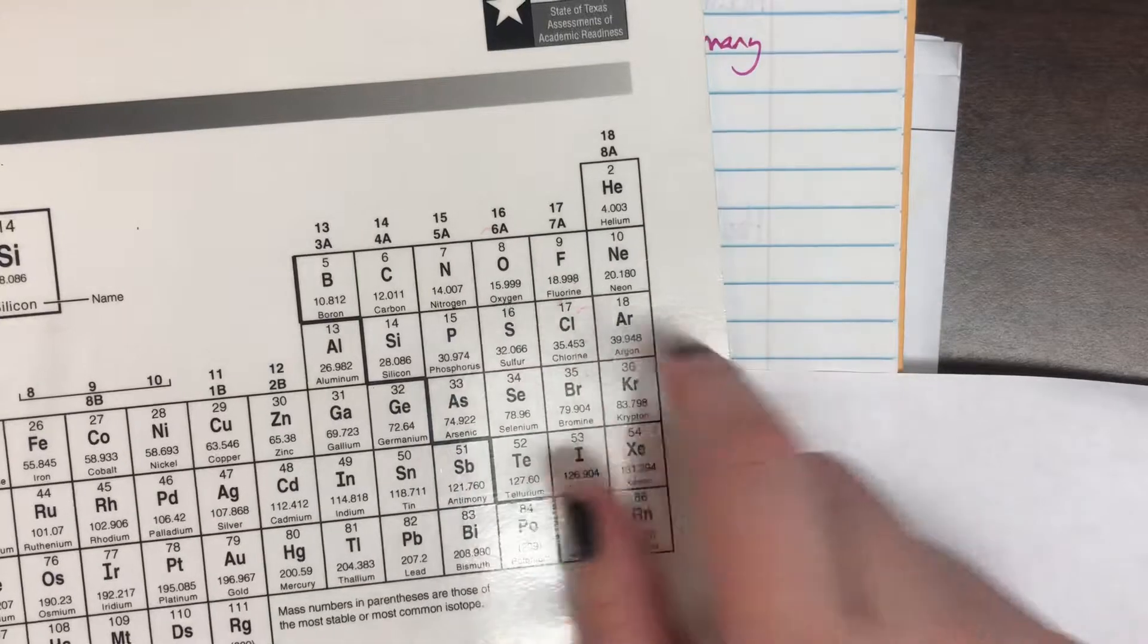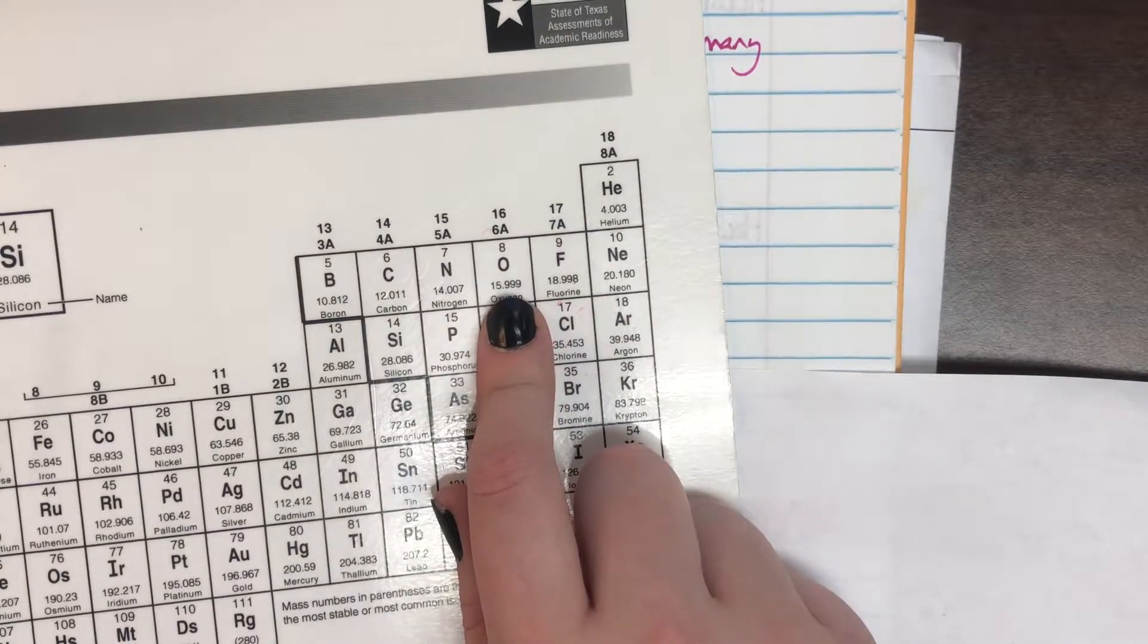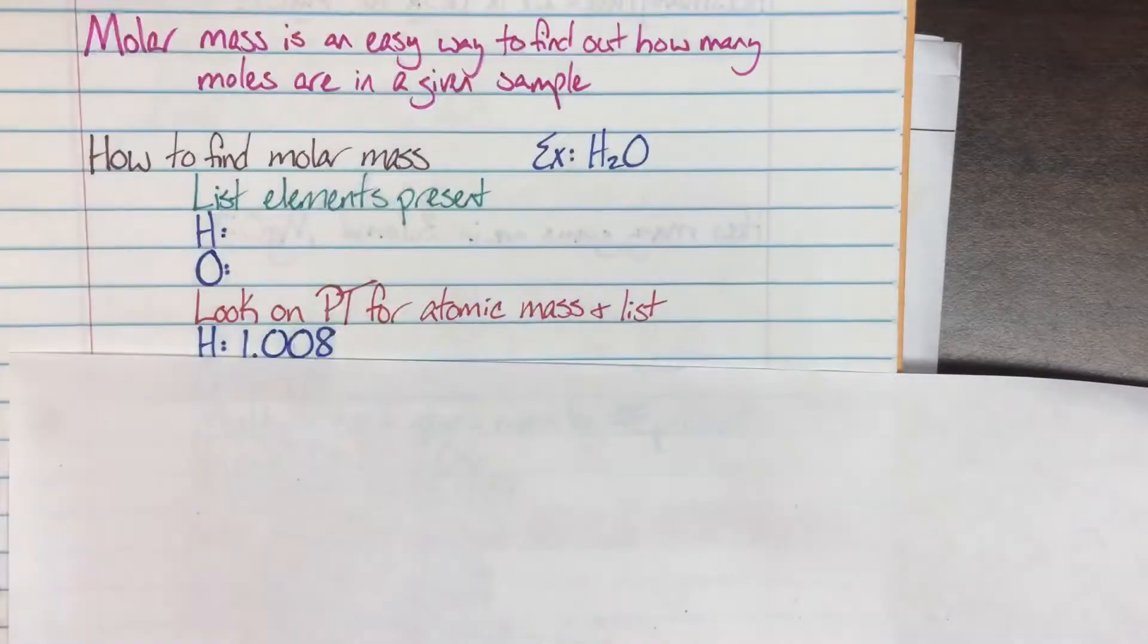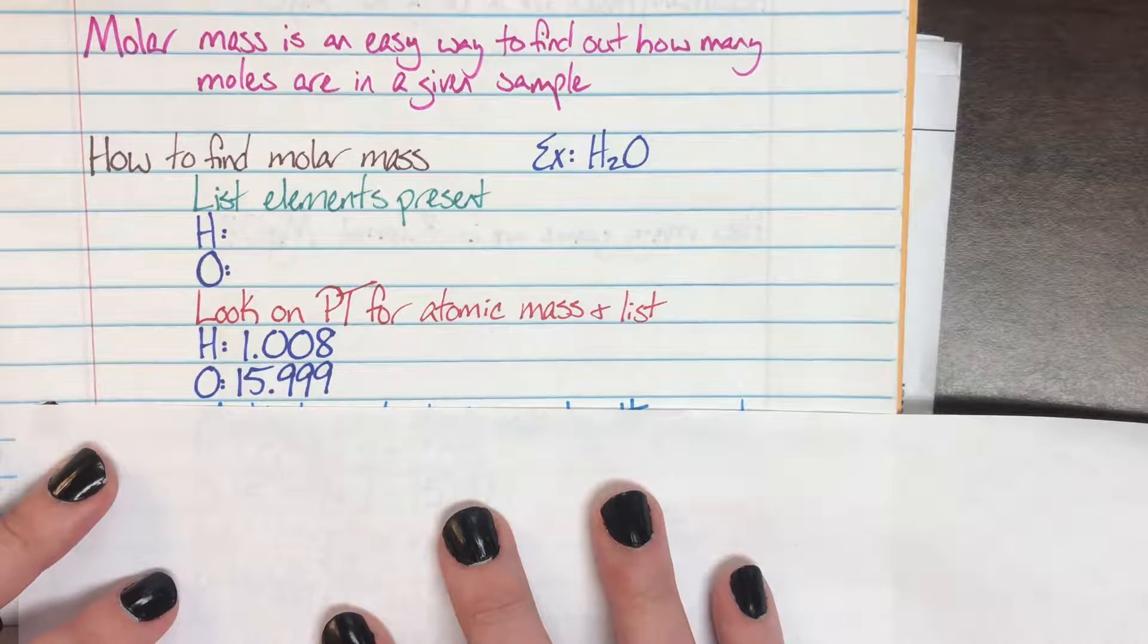I have to do the same thing for oxygen now, so I'm going to come over to oxygen and I'm going to see that it is 15.999. So then next to oxygen I will write that number, 15.999.